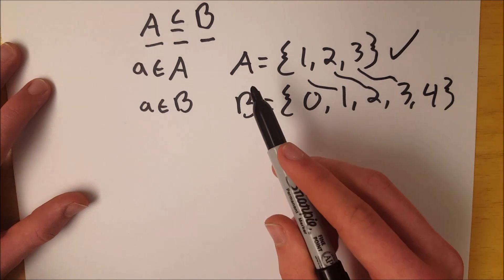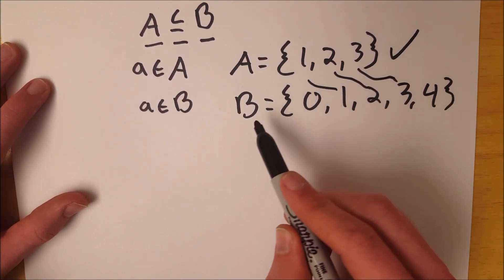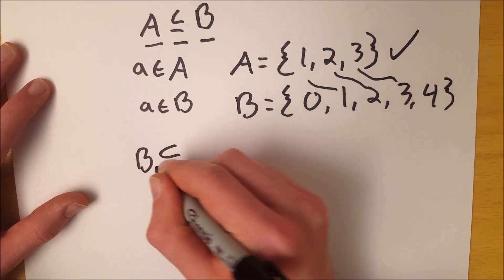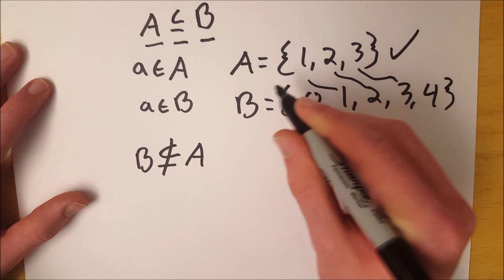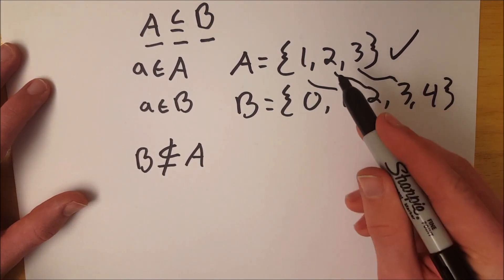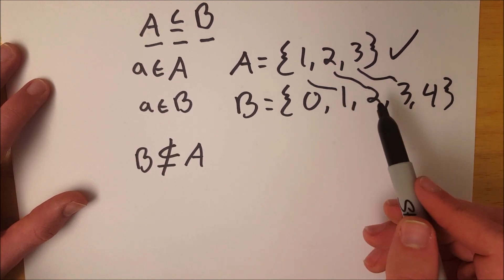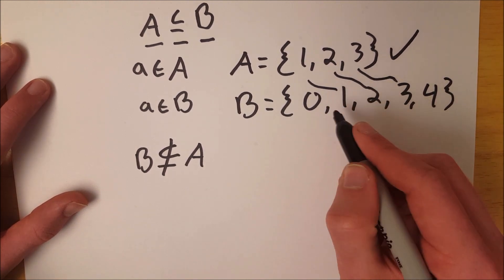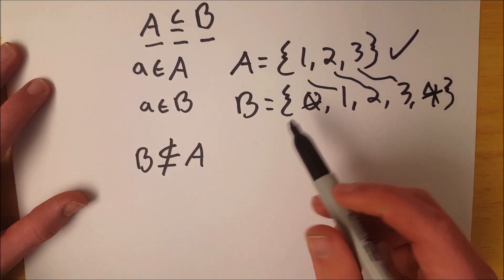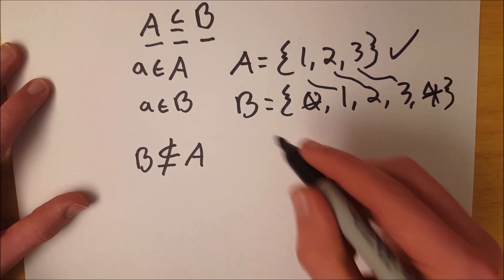B has 0, which A doesn't have, and it has 4, which A does not have, which means that B is not a subset of A. However, A is indeed a subset of B because B contains all of the elements that A has. If B contained only the elements that A had — so 1, 2, 3, no 0 and no 4 — then B would be equal to A, and B would also be a subset of A.